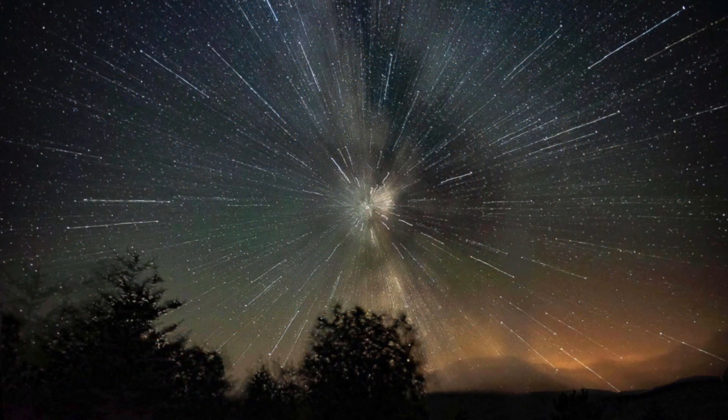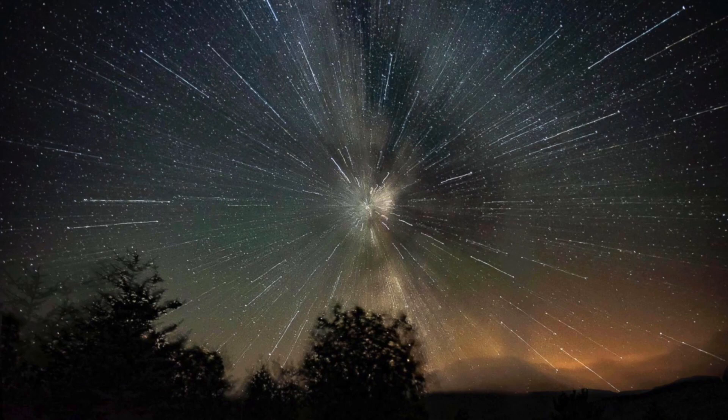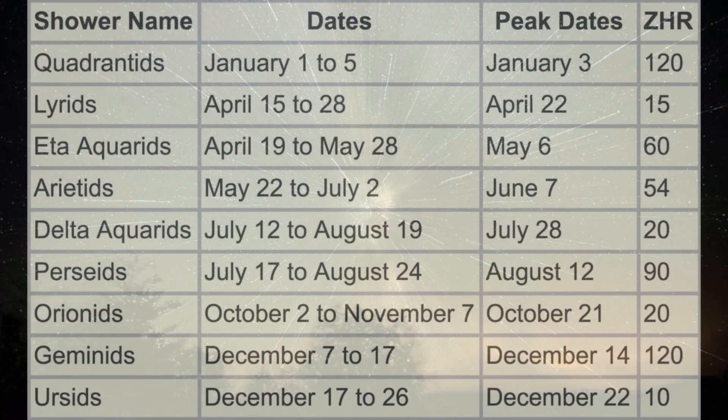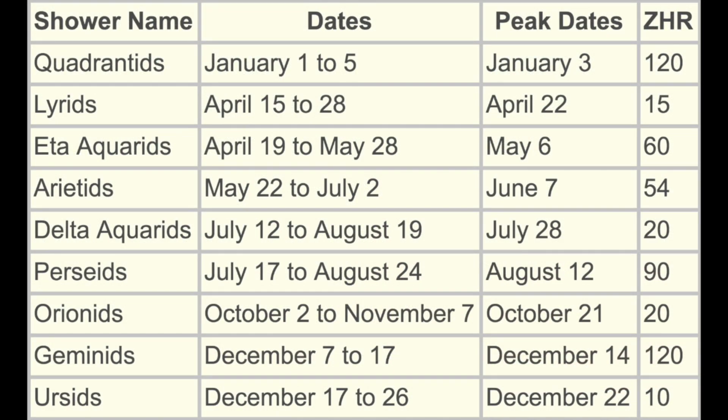We've even named these meteor showers based upon where in the sky they appear to radiate from, such as the Leonids, the Perseids in July, and the Geminids in December.